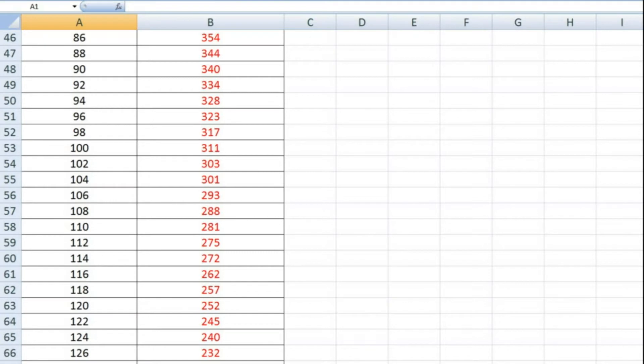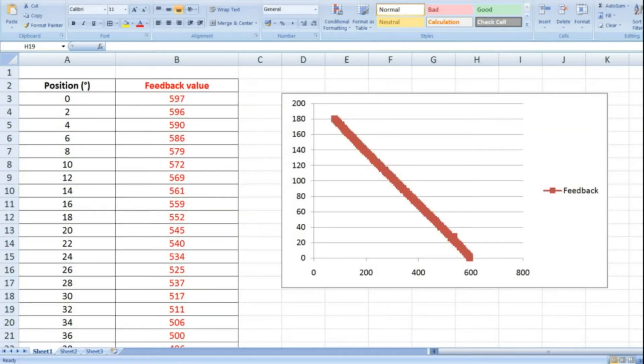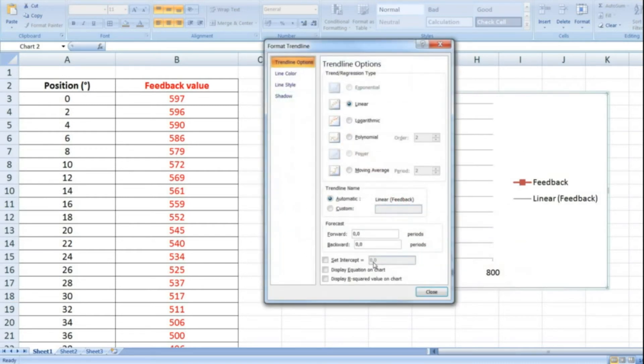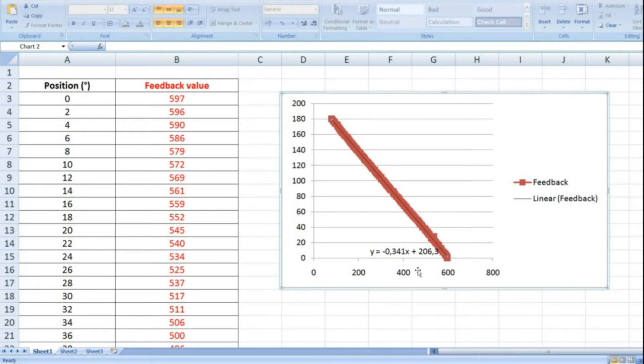To find the ratio I plotted them in Excel and found that it follows a linear path. Then I let Excel find the matching equation and I can use that formula in my code to calculate the current position of a servo.